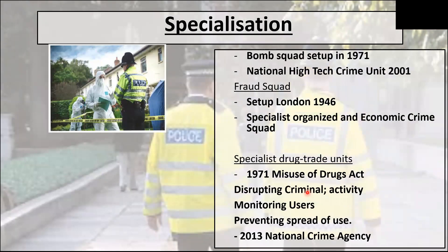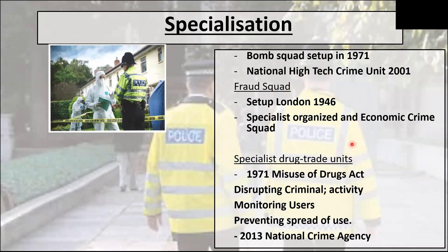Specialization in police roles: in 1971 the Bomb Squad was set up. In 2001 the National High-Tech Crime Unit was set up to tackle things like online crime, hacking, fraud, and viruses. The Fraud Squad was set up in London in 1946 and developed later to become what we know today as the Specialist Organised and Economic Crime Squad. Also in 1971, as a direct result of the Misuse of Drugs Act, various drug units were set up.